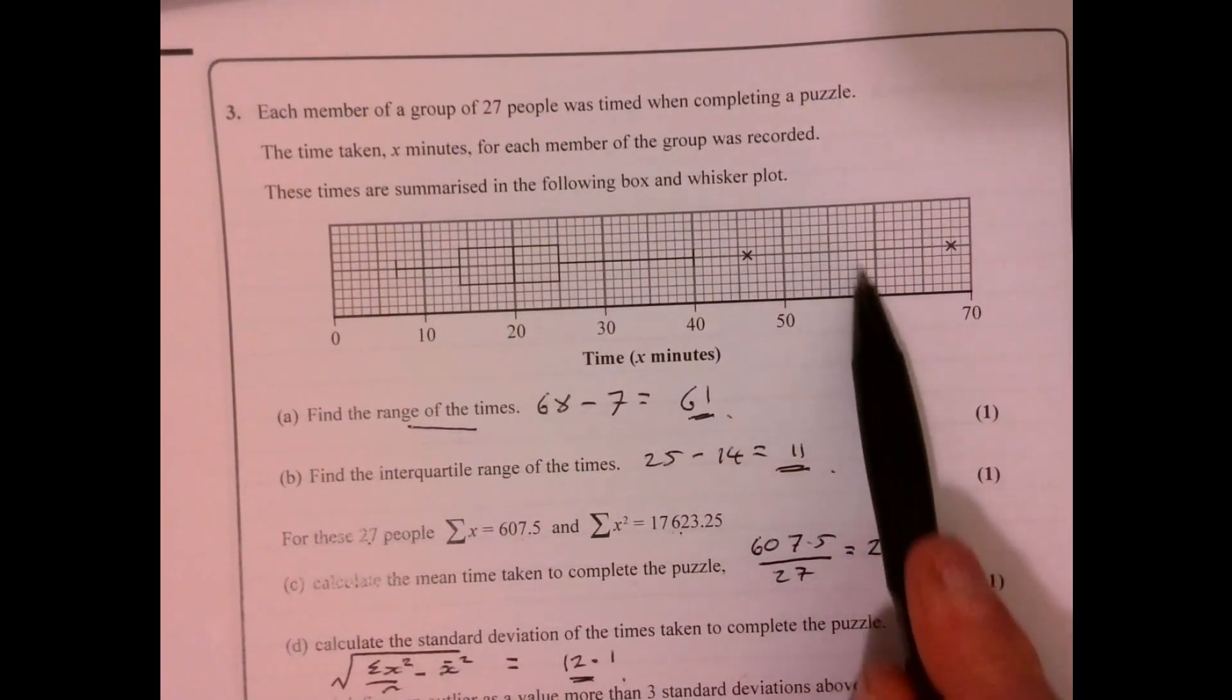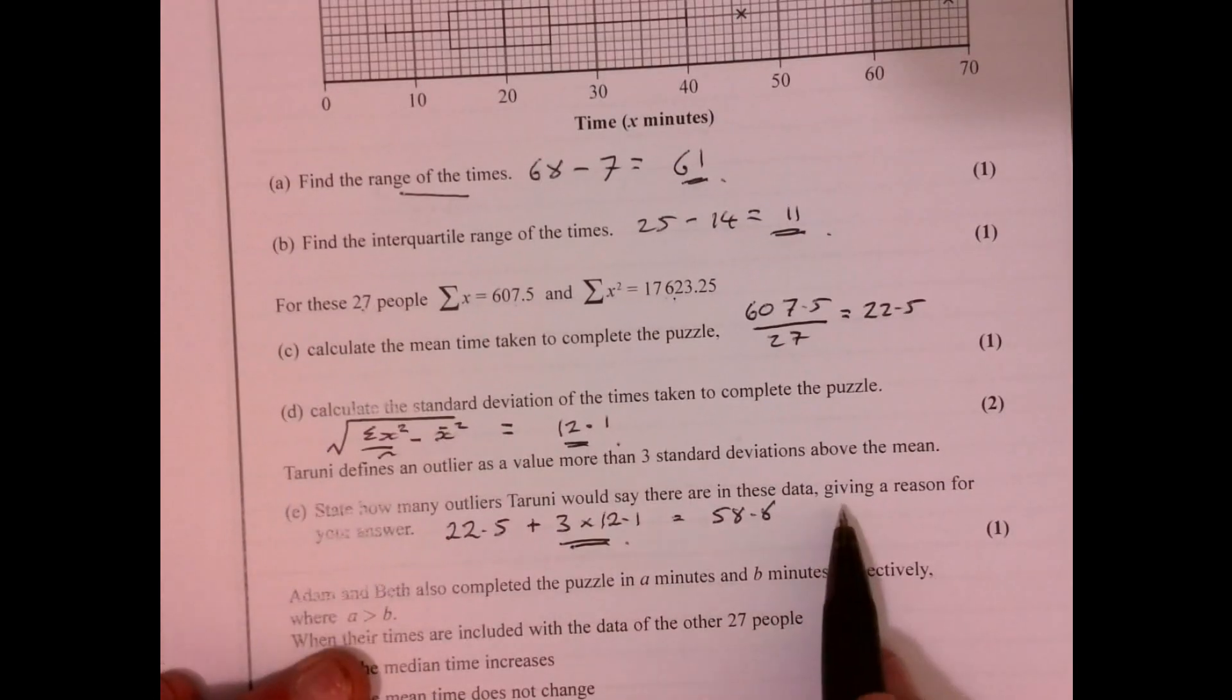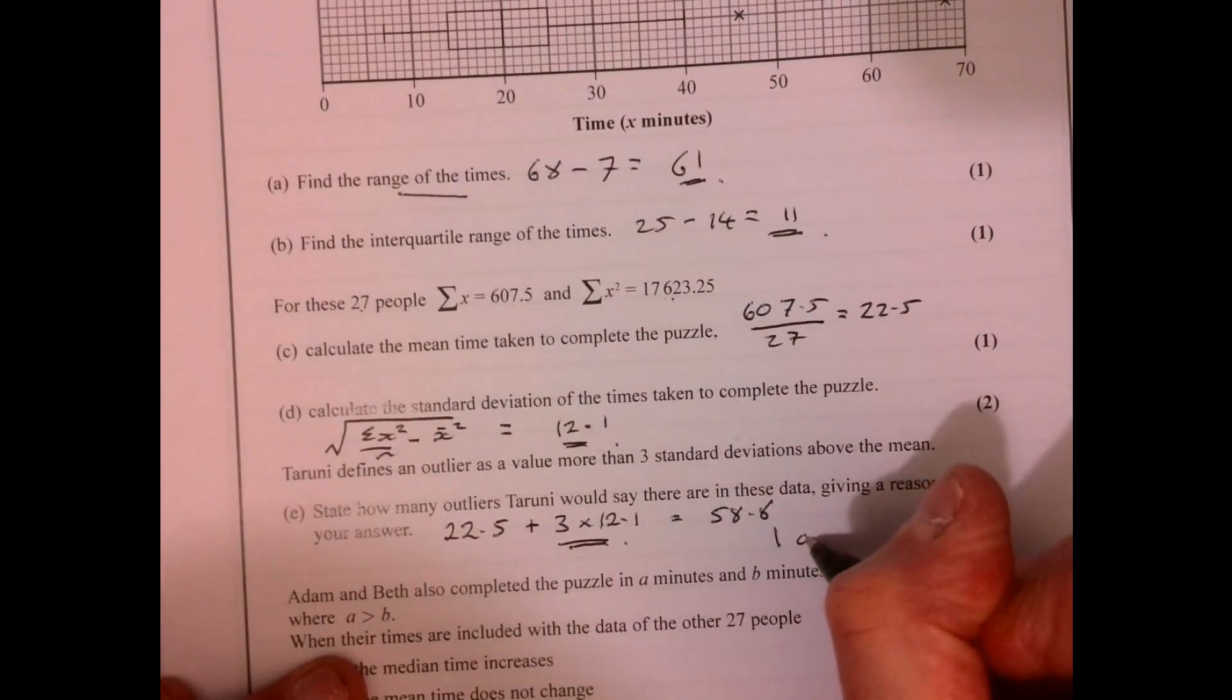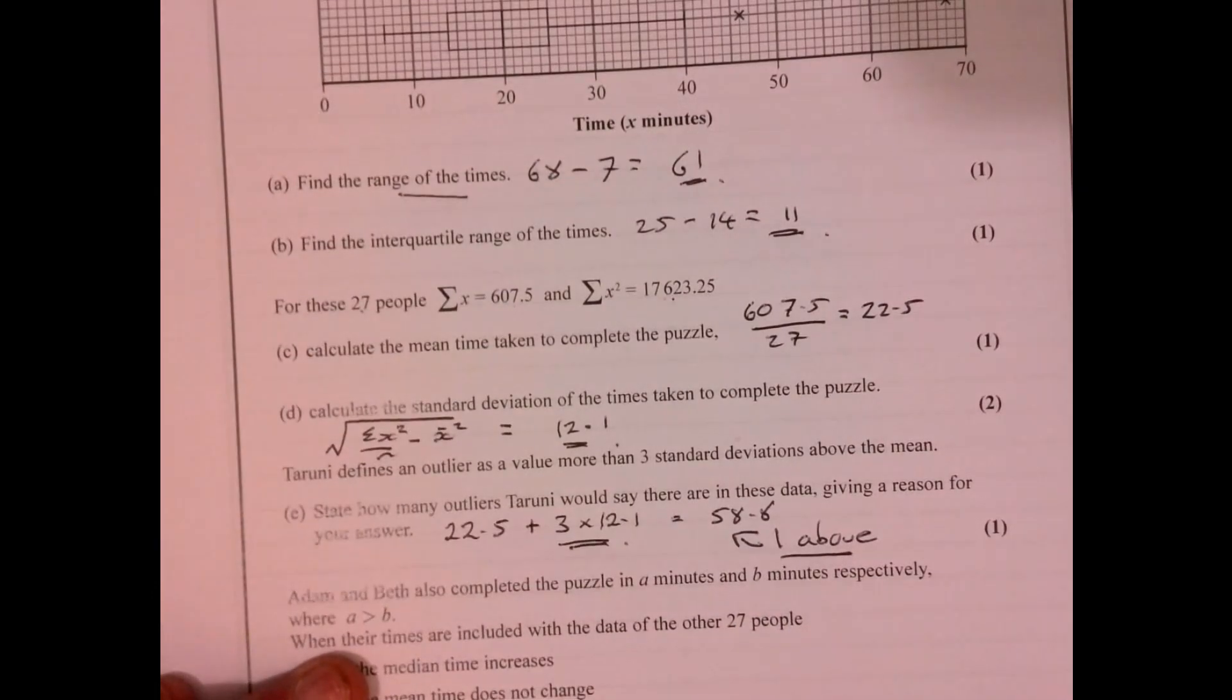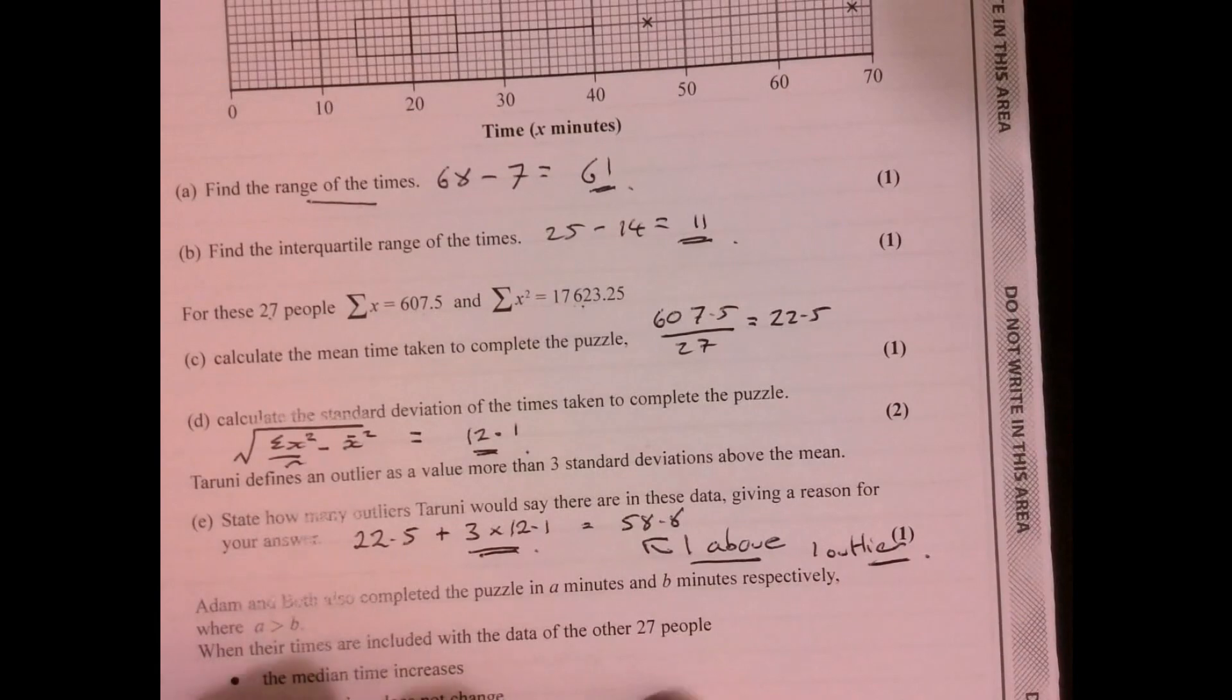So now let's go and have a look to see how many values are above 58.8. There's only one, 58.8 around there somewhere. So there's only one above that figure. Therefore, there is one outlier.